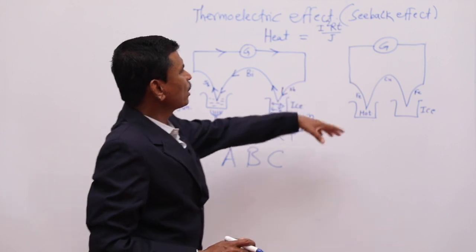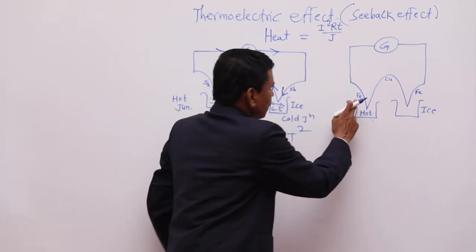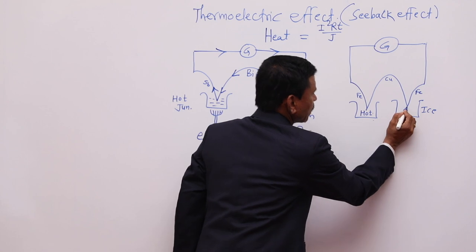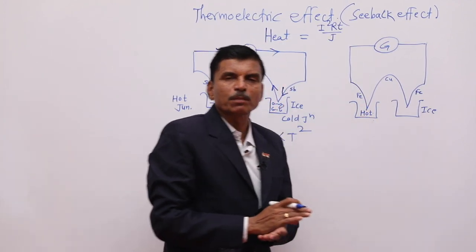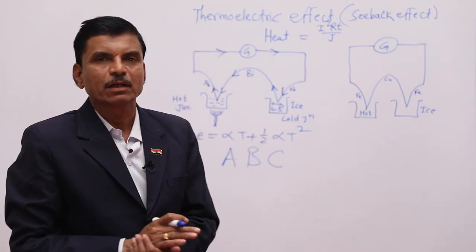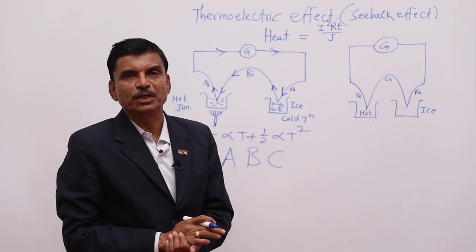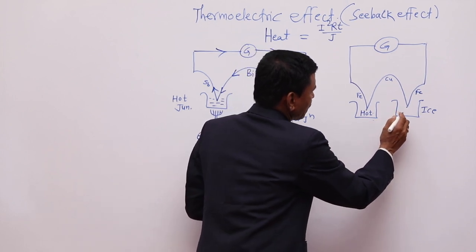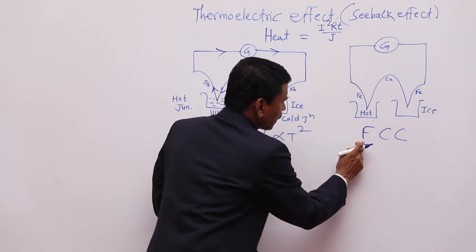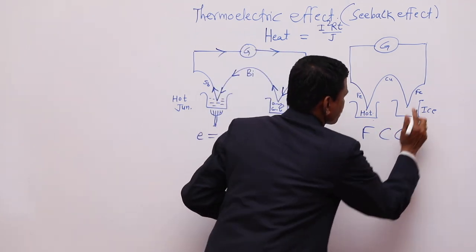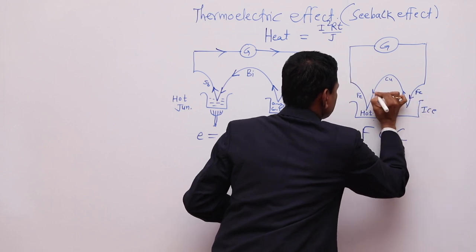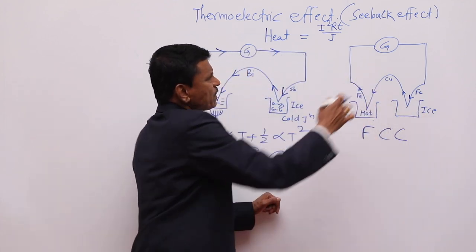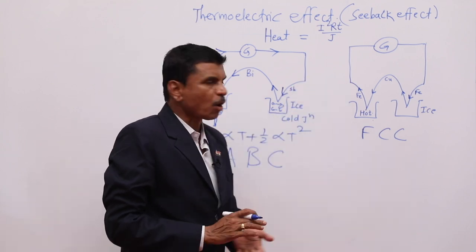Seebeck also took another pair of dissimilar metals — iron (ferrous) and copper. These two wires form a thermocouple with one hot junction and one cold junction. As the two junctions are at different temperatures, a thermoelectric EMF is produced. The current direction can be remembered as FCC: Ferrous to Copper through the Cold junction. This is the thermoelectric EMF produced in the iron-copper thermocouple.